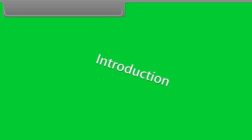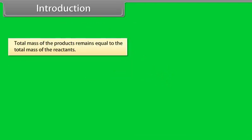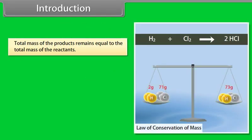Introduction. The total mass of the products remains equal to the total mass of the reactants. For example, H₂ plus Cl₂ gives 2HCl.